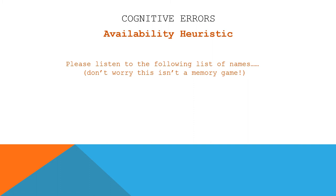To understand how the availability heuristic works, let's do a little activity. This one requires you to really listen to everything I'm going to say. Unlike memory tasks, you won't have to write down everything. Just sit down, listen, pay attention to a list of names I'm going to read to you, and then I'll ask you a question after I'm done.